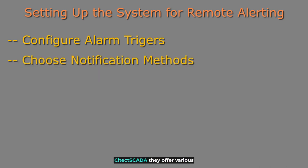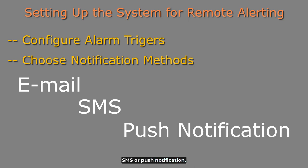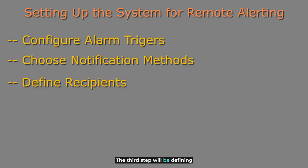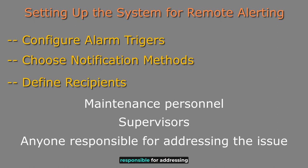After that, you will need to choose the notification method. Citect SCADA offers various kinds of notification methods, including email, SMS, or push notifications, so you can choose the one that suits your needs the most. The third step is to define the recipients — you need to specify who should receive those alerts, whether it's maintenance personnel, supervisors, or anyone responsible for addressing the issue.